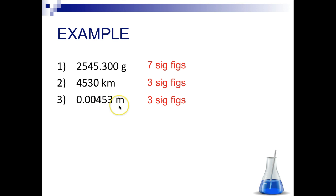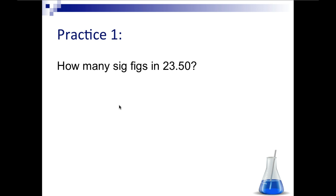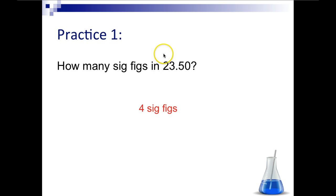Let's try some practice. How many significant digits are in 23.50? Pause the video, figure it out, consult your rules, and unpause when you're ready. This number has four significant digits. It has a decimal, so that zero on the end will count. We start on the left and count all the way to the end: 1, 2, 3, 4.